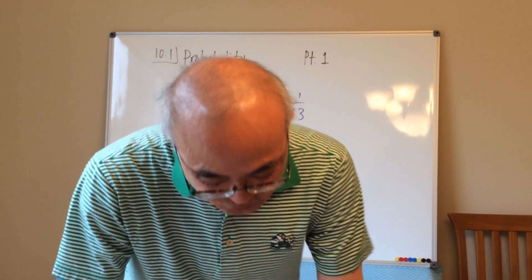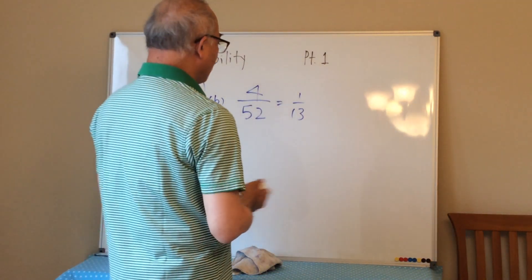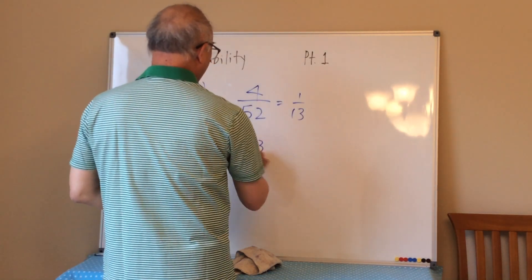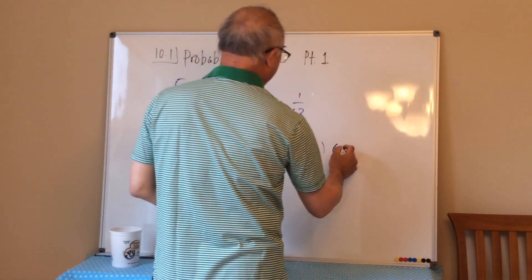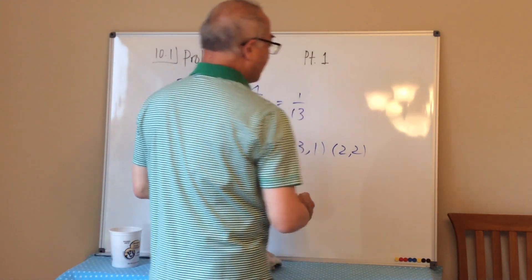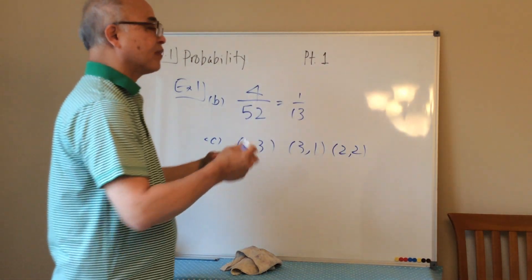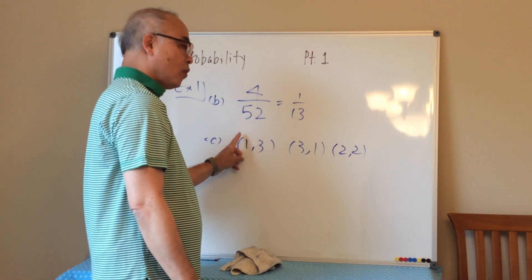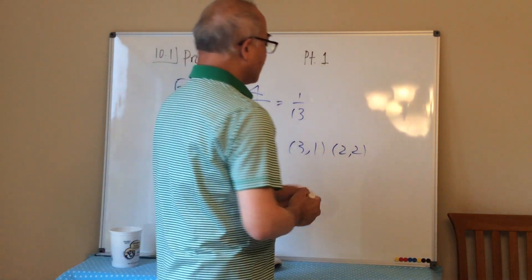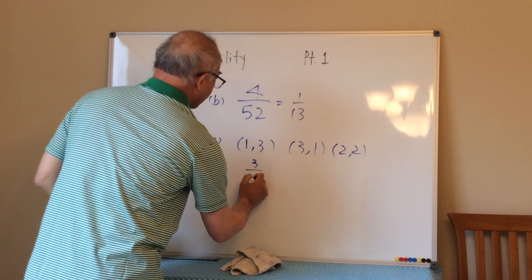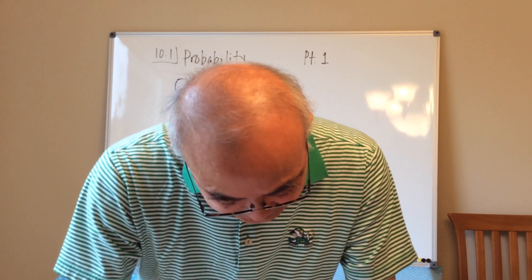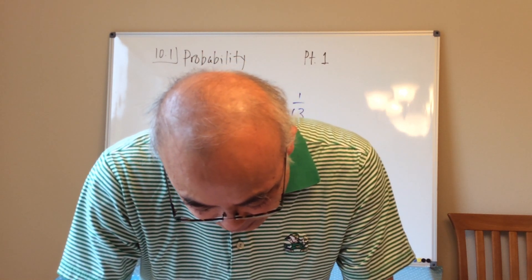Part c asks for rolling a sum of four on a single roll of two fair dice. The ways to get a four are: rolling 1 and 3, 3 and 1, or 2 and 2. Since there are 6 × 6 = 36 total combinations, the probability is 3/36, which simplifies to 1/12.